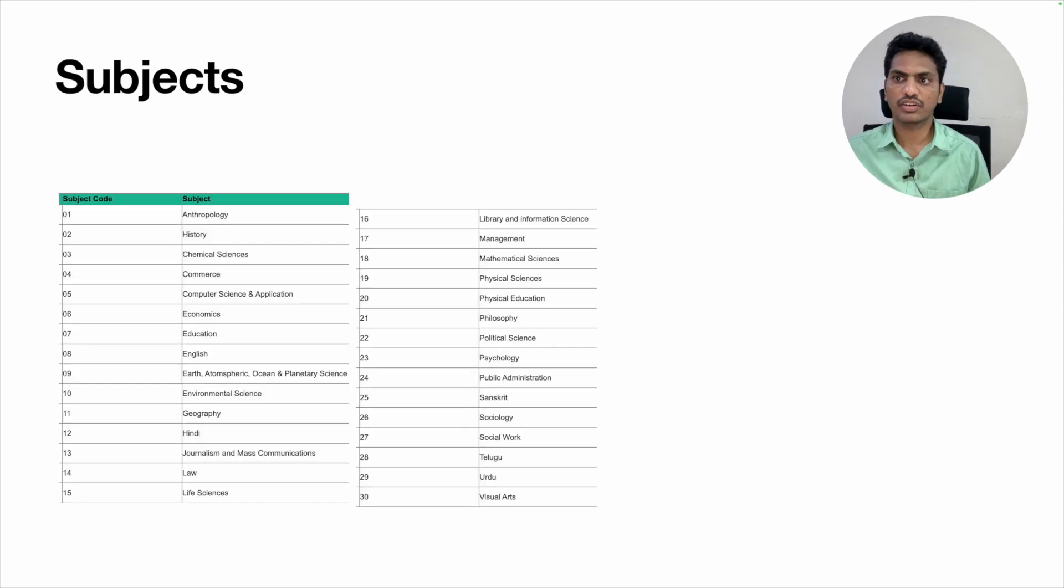Look at the subjects - there are only 30 subjects in this AP SET. It is different from one state to another state. In our Andhra Pradesh state, we got the approval from UGC only for these 30 subjects. Look at the subjects. If you are doing or if you have done your postgraduation in one of these subjects or related subjects, then only you are eligible to appear for the AP SET exam.